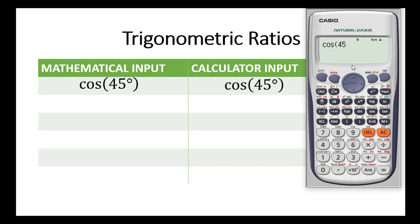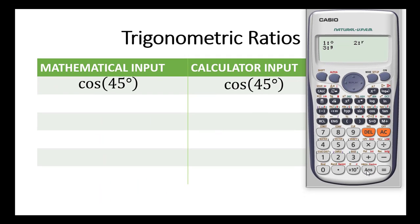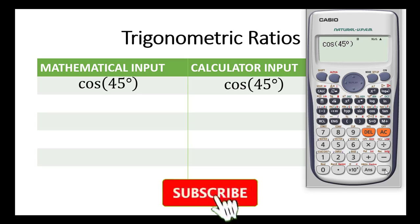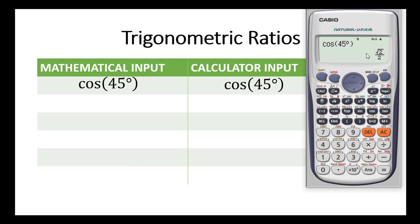To key in the degree symbol, you can simply press shift and then press the answer key. On top of it, do you see DRG? The D stands for degree, the R stands for radians, the G stands for gradians. The first option is degree, the second is radians, and the third is gradians. We are interested in degree, so we press 1 and then close the bracket. Then press equal to. The answer we get is the square root of 2 over 2.